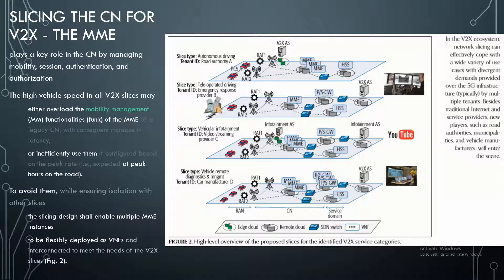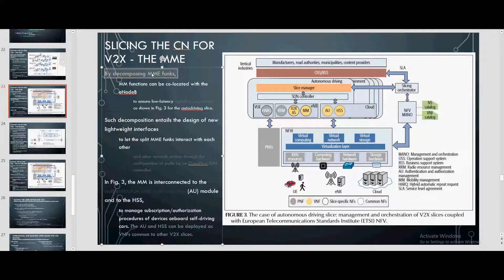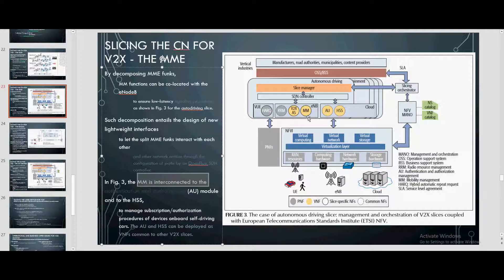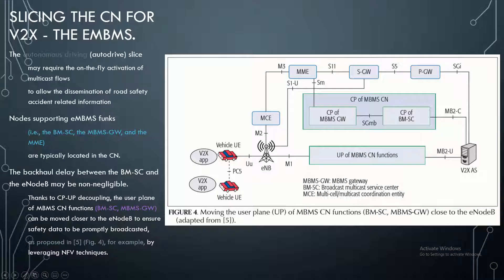The MME plays a key role in the CN by managing mobility, session, authentication, and authorization. The high vehicle speed in all V2X slices may either overload the mobility management function of the MME or inefficiently use it at peak hours. To avoid this, the slicing design shall enable multiple MME instances to be flexibly deployed as VNFs and interconnected to meet the needs of the V2X slices. By decomposing MME functions, the MME can be co-located with the eNodeB to lower latency, as shown in Figure 3 for the autonomous driving slice. TSU and HSS can be deployed as VNFs common to the autonomous driving slice.